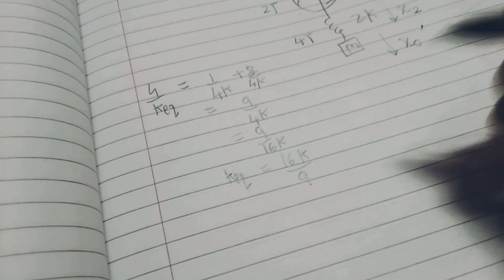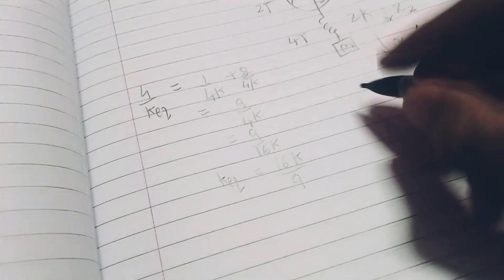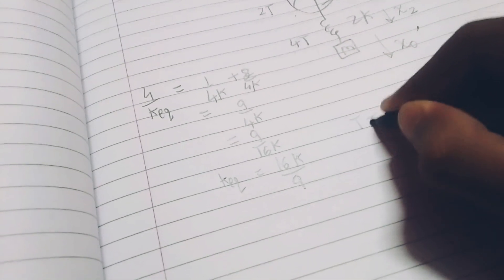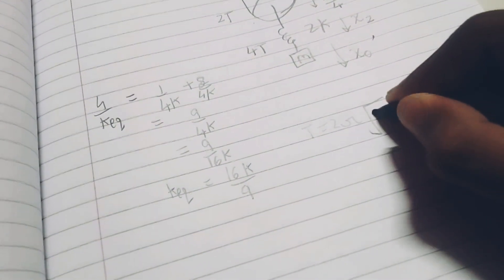Now, as soon as I got k equivalent, I can write the formula of time period equal to 2 pi under root m by k.